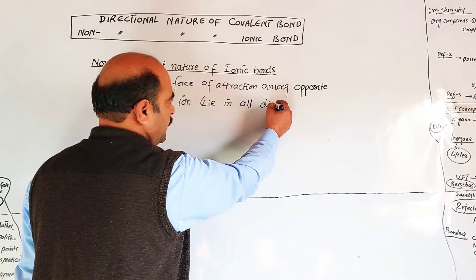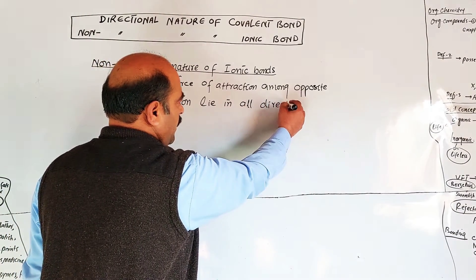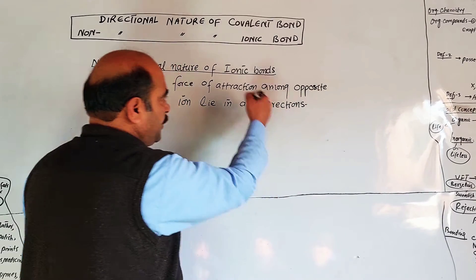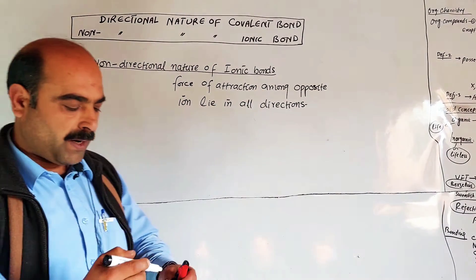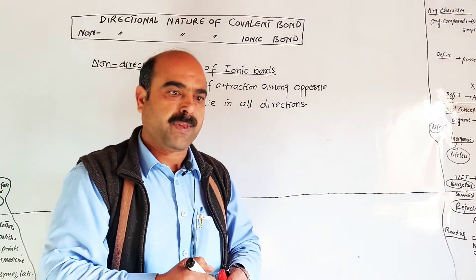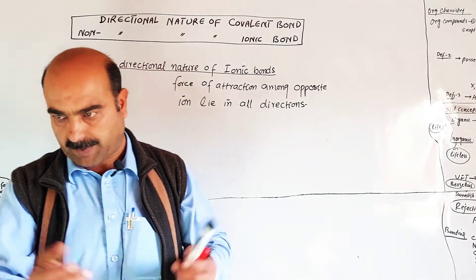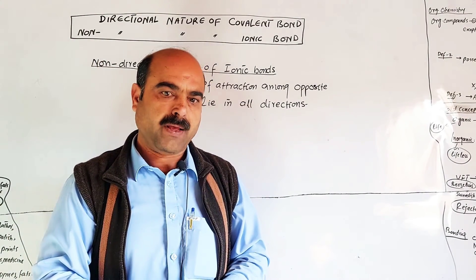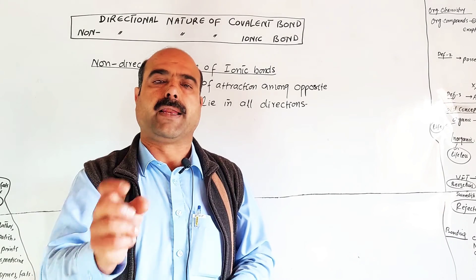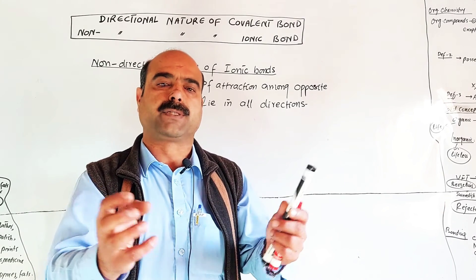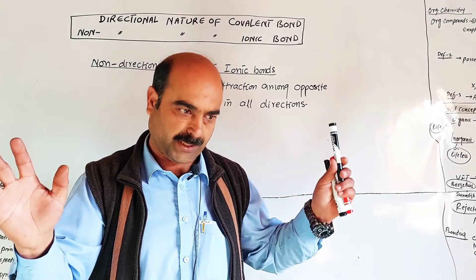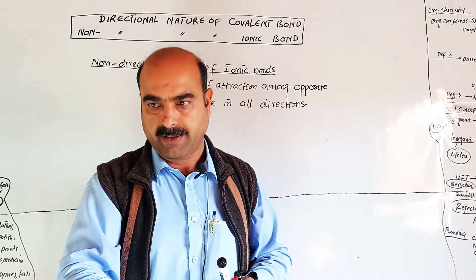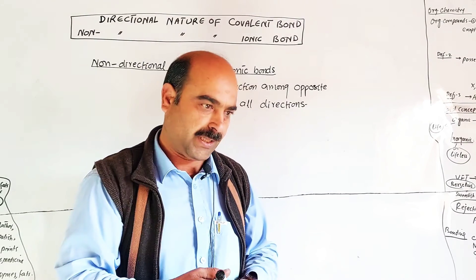The answer is that ionic bonds are non-directional. Cations and anions have attractive forces in all directions. There is no single proper direction — hence ionic bonds are non-directional.